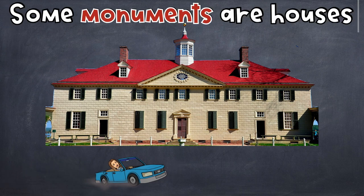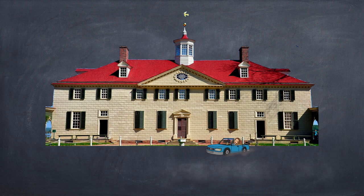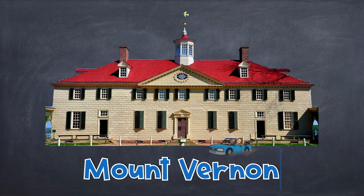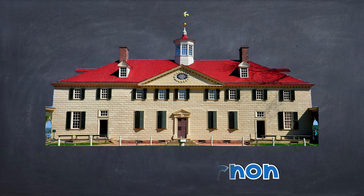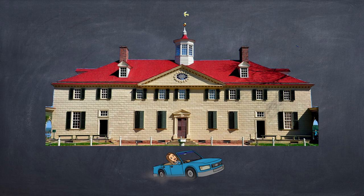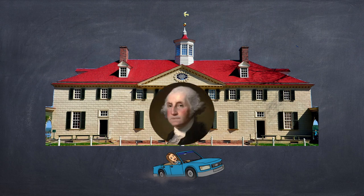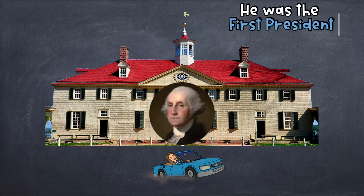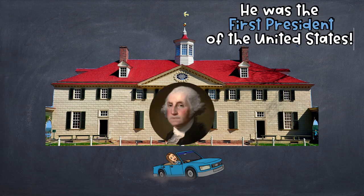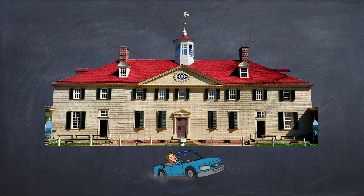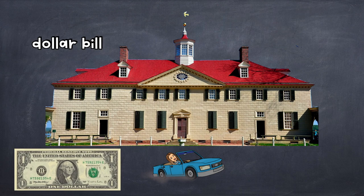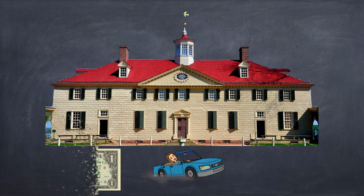Some monuments are houses. This is Mount Vernon. Mount Vernon was George Washington's house. He was the first President of the United States. You've probably seen him before — on the dollar bill or on the quarter.